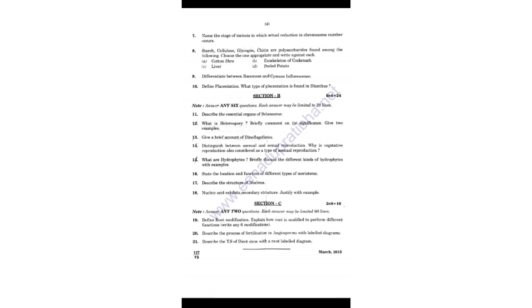Coming to Section B, 8 questions are given and you have to write any 6. The questions include: 11th - describe the essential organs of Solanaceae; 12th - what is heterospory; 13th - dinoflagellates; 14th - differences between asexual and sexual reproduction; 15th - water hydrophytes; 16th - location and function of different types of meristems; 17th - structure of nucleus; 18th - nucleic acid exhibits secondary structure, justify with an example.